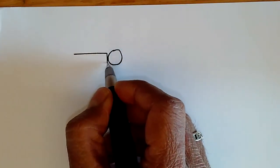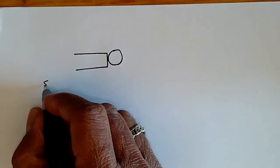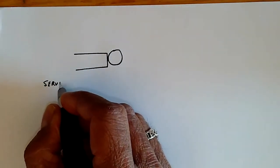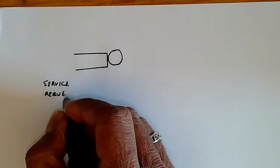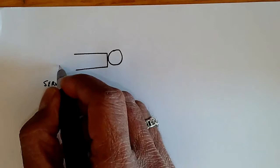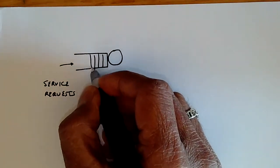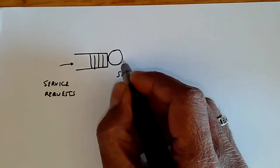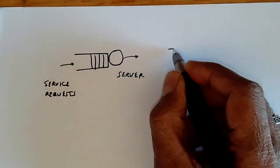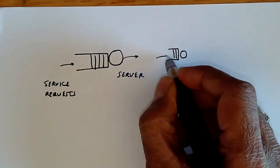And we always have customers or service requests arriving over here. So, the service requests arrive into a buffer where they can wait and then they are served by a server. And then they depart the server. And of course, they may go into some other queue further down the line, but we'll study that later.